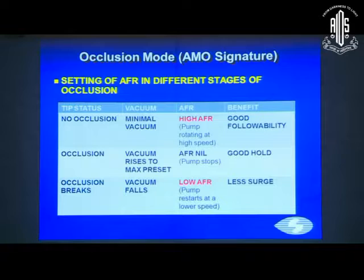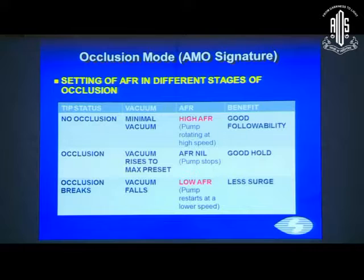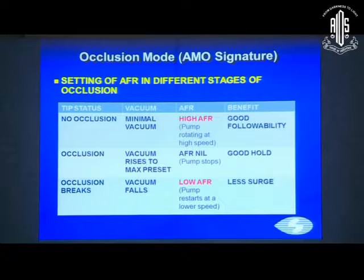When occlusion occurs, the vacuum rises to a maximum preset and the aspiration flow rate becomes nil because the tip is occluded — the pump stops, giving a good hold. When occlusion breaks, the vacuum falls, but a lower aspiration flow rate is set because different AFRs can be programmed for different stages of surgery. The pump restarts at the lower AFR, resulting in less surge.